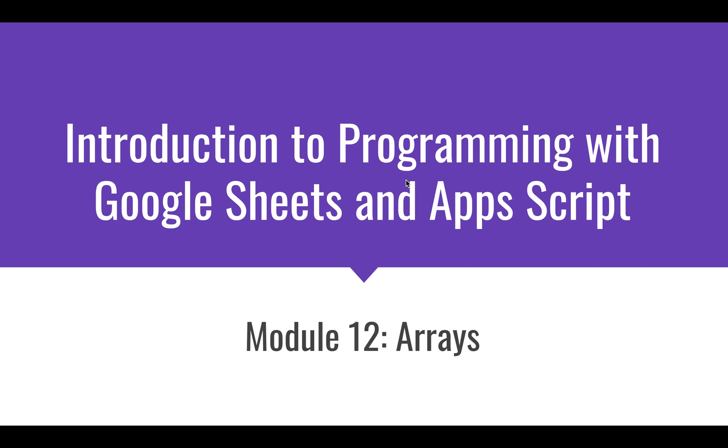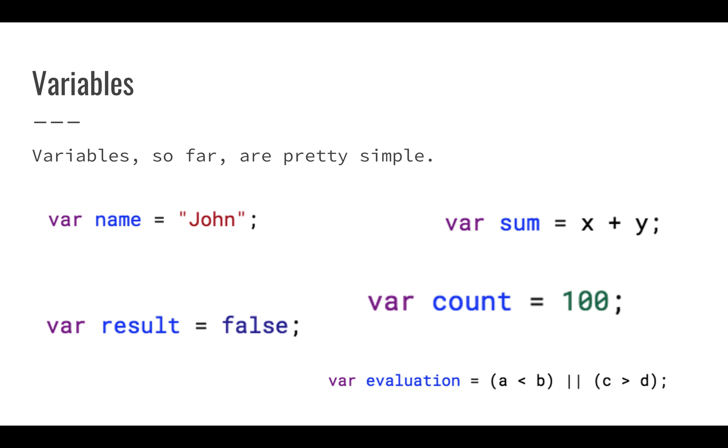So far we've looked at if-else statements, numbers and strings, and boolean evaluation. We've learned quite a lot, but one thing that's been true is that we've really only seen basic variables. Everything we've seen is pretty simple - var name equals John, sum has some number, result is false. Even when we've dealt with evaluation, it's just been boolean values, true or false, all single values.